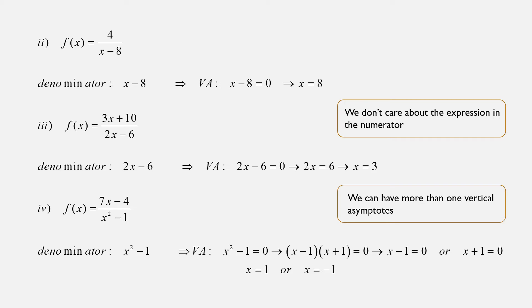Example 3: f(x) equals (3x plus 10) over (2x minus 6). We only care about the denominator, which is 2x minus 6. Setting it equal to 0: 2x minus 6 equals 0, so 2x equals 6, which means x equals 3. That's the equation of the vertical asymptote.